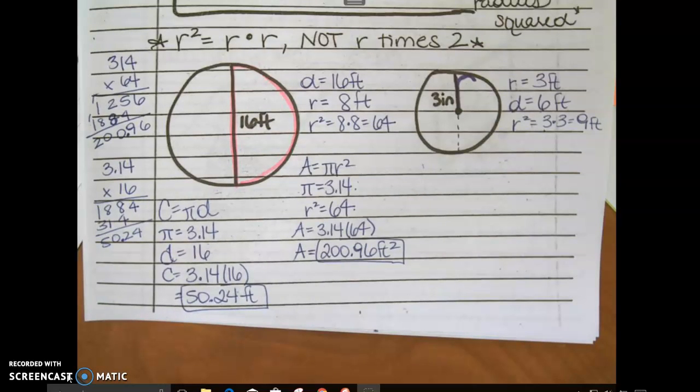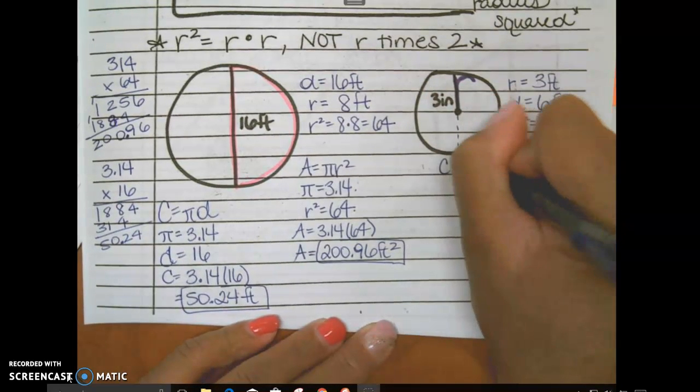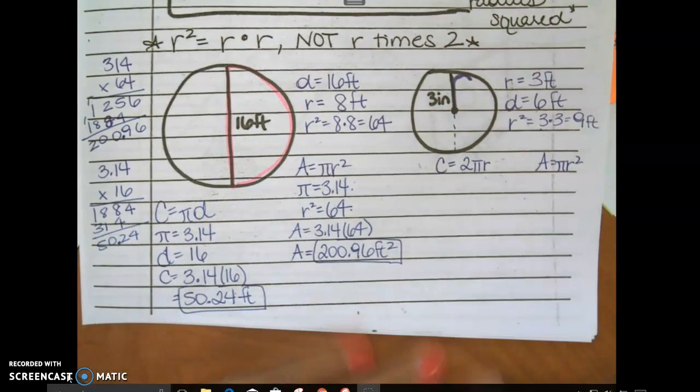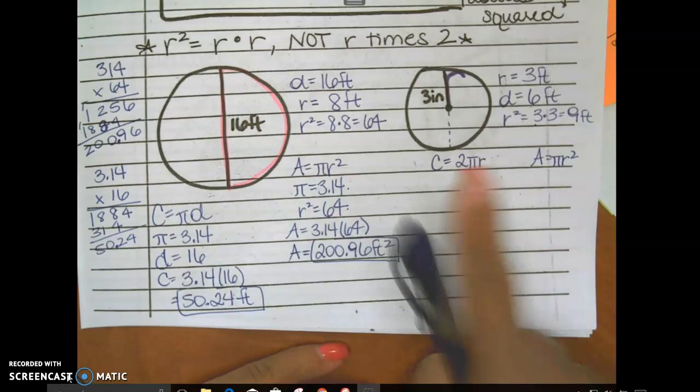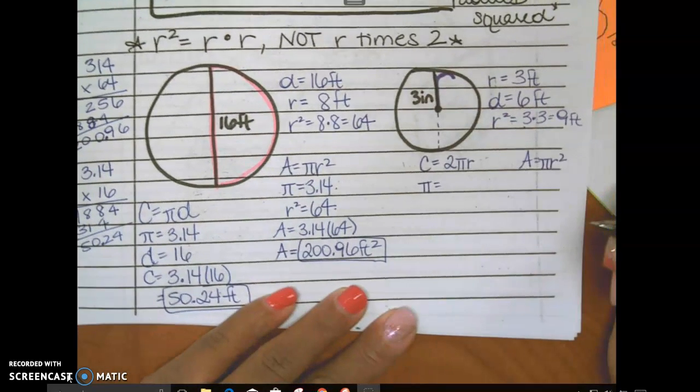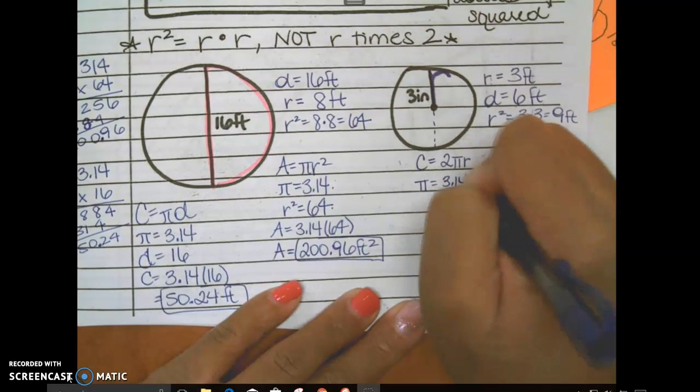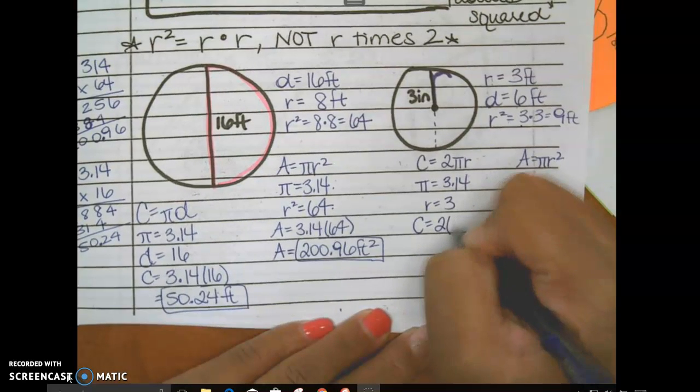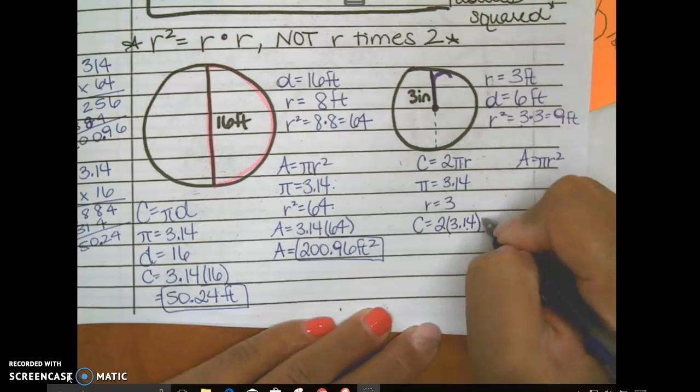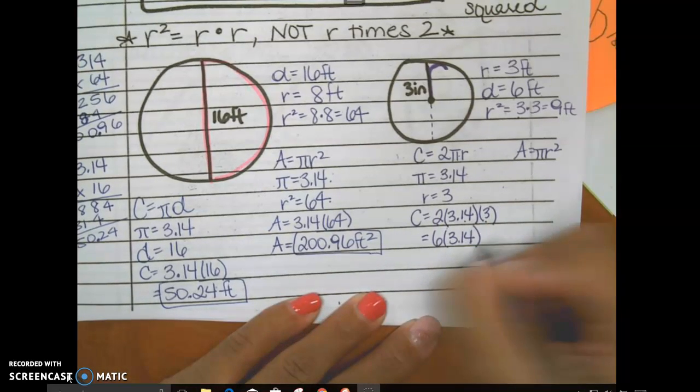You will be given formula sheets when you have a test or quiz on them, so that you can distinguish the two processes and the two measurements. So over here, circumference equals—I'm going to do 2 times pi times radius. And then I'm going to do area equals pi R squared. This one doesn't change, but this one can. Pi is 3.14. And then what's the radius over here? 3 inches. So circumference equals 2 times 3.14 times 3. What's 2 times 3? 6. So this is 6 times 3.14.